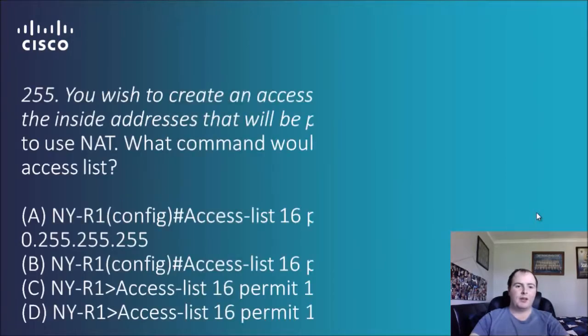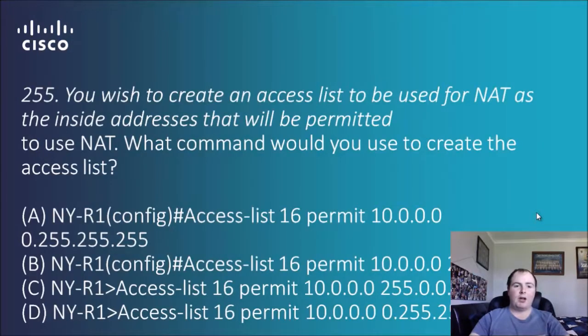The answer is D — for publishing an internal system to the internet. Question 255: you wish to create an access list to be used for NAT as the inside addresses that will be permitted to use NAT. What command would you use to create the access list?